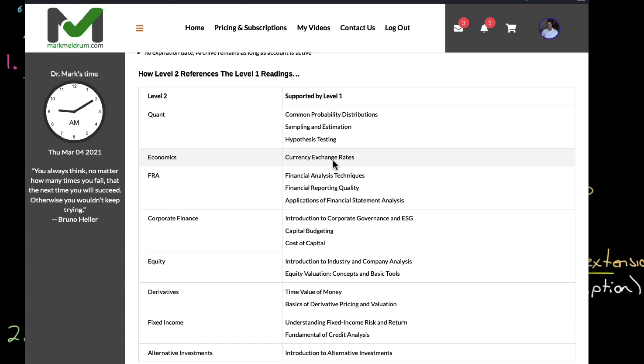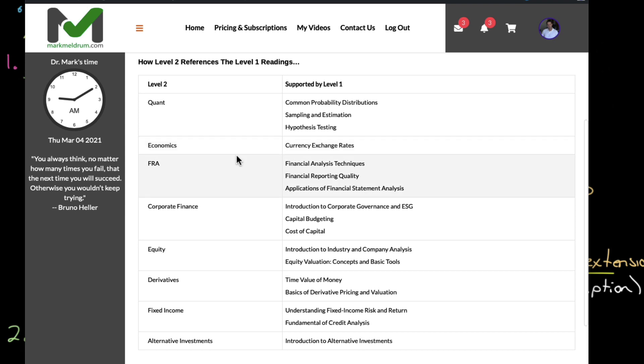For economics, currency exchange rates, yes, you're going to see currency exchange rates again at Level 2. And this is, for each section again, these are the readings at Level 1 that will support you at Level 2. That the better the understanding you have of these, I think there's 18 here, of these 18 readings, the easier those readings, the continuation of those readings become at Level 2.